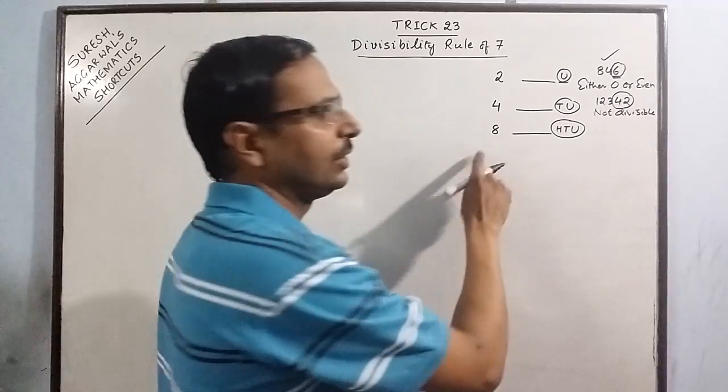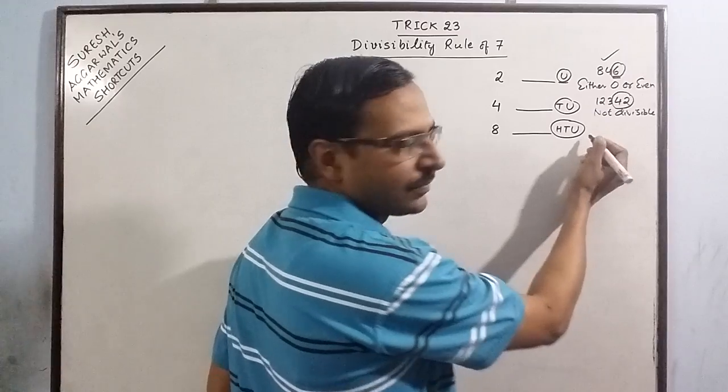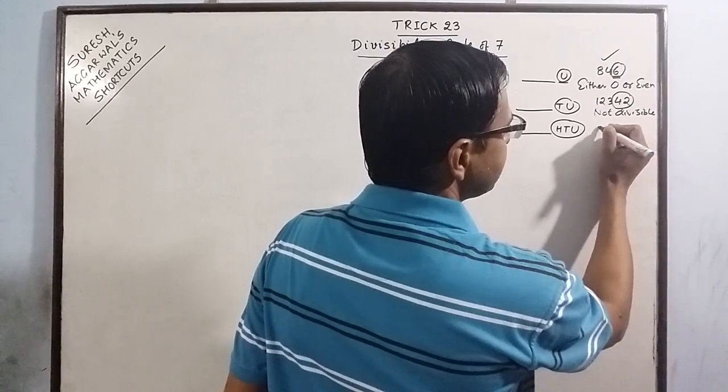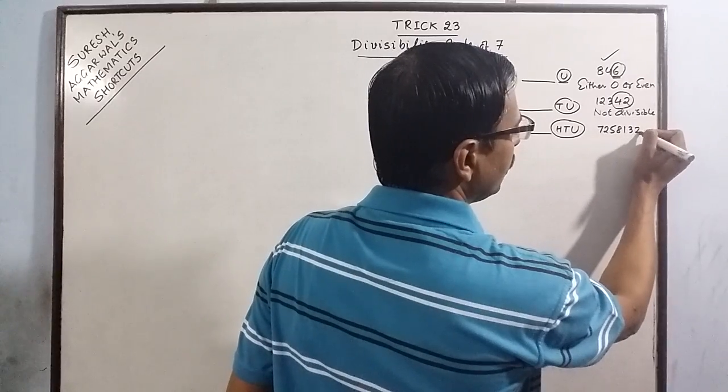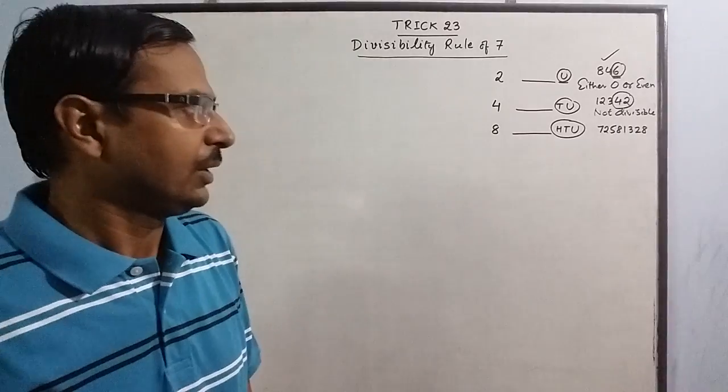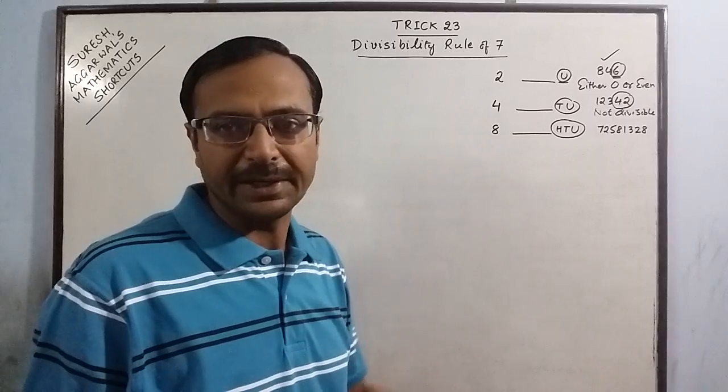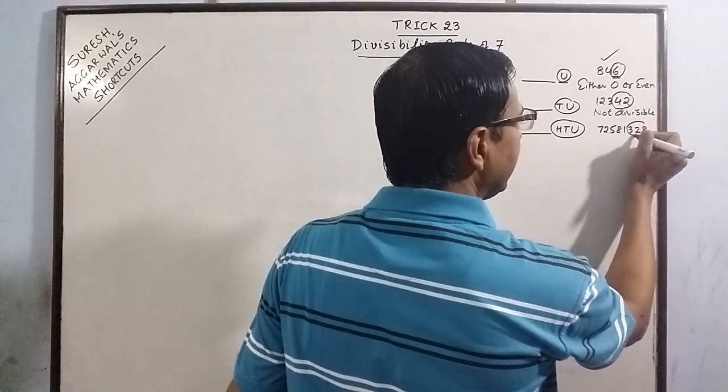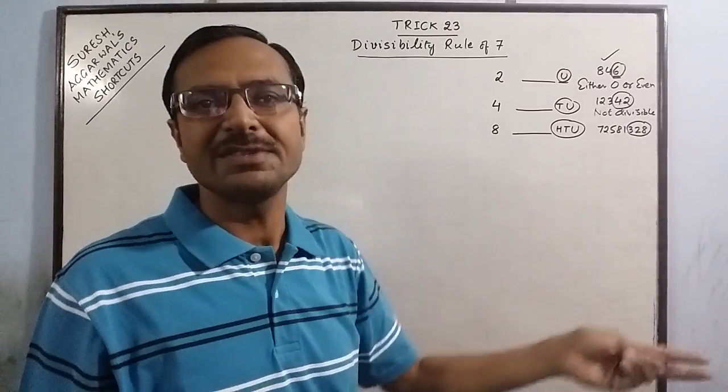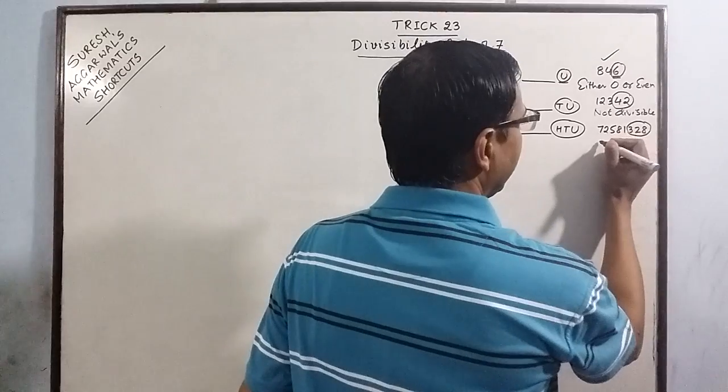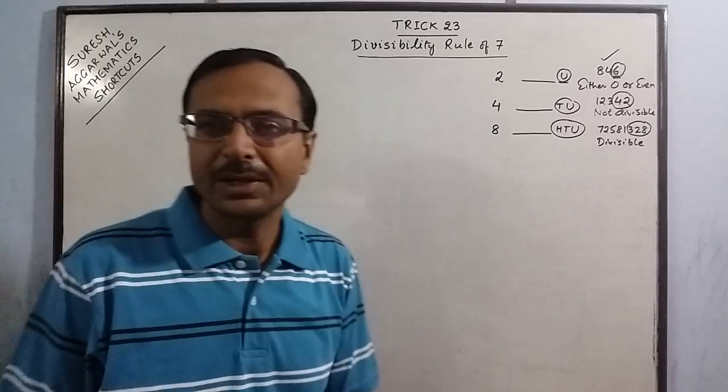Similarly, for 8 we have to increase 1 more digit, so we inspect the number in the last 3 places. For example, we have 7258132. Now this is a very big number, and when we have a rule for the number it is easier to inspect. Now here we have 328 in the last 3 places, and 328 is divisible by 8, so the entire number is divisible by 8. So these are the rules for 2, 4, and 8.